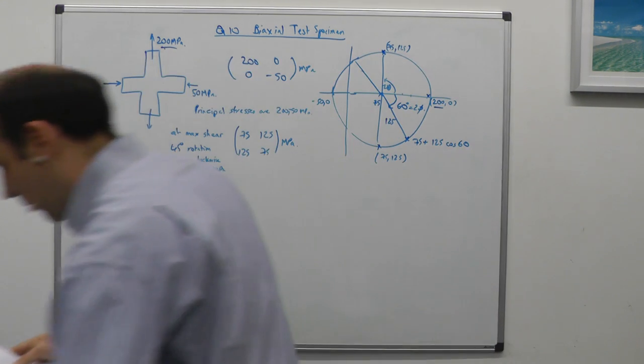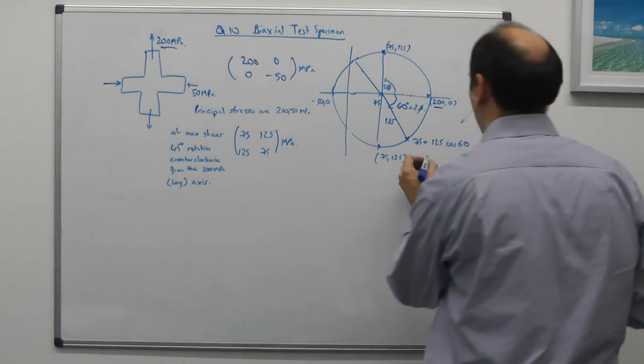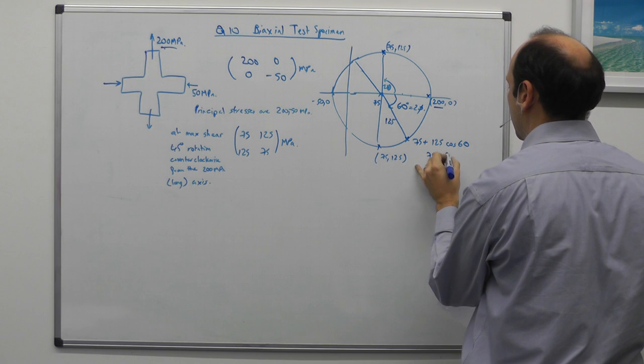Now you need to remember what your cosines and sines are. I can never do it. So I'm going to just put it in a calculator. That's a half. So that's 75 plus 62 and a half.